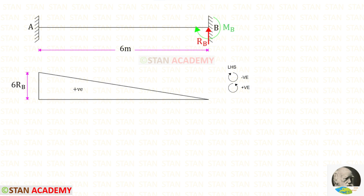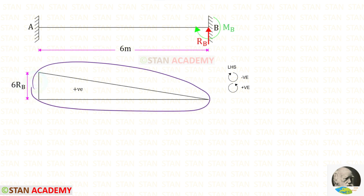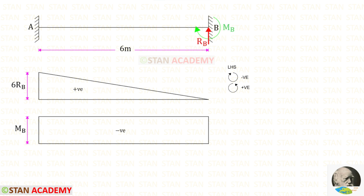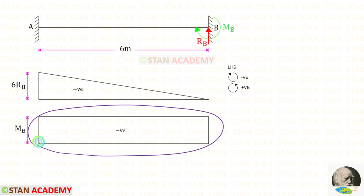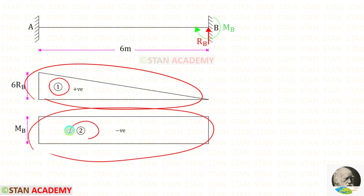First, take the vertical reaction Rb. It acts in the anti-clockwise direction, so it is positive, and the distance is 6, giving 6Rb. The diagram is in the shape of a triangle. Now take the moment Mb — assume it acts in the clockwise direction, making it negative. Its diagram is in the shape of a rectangle. Label these as diagram 1 and diagram 2.